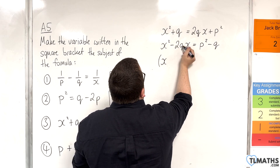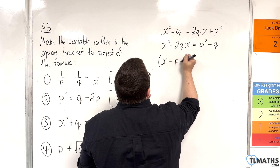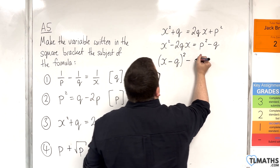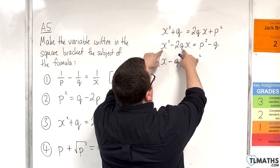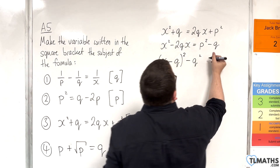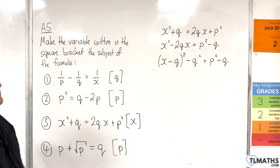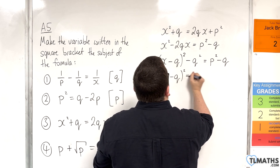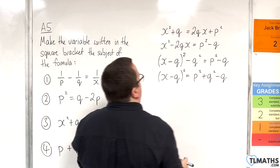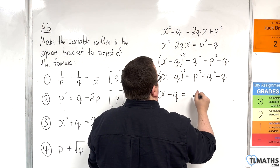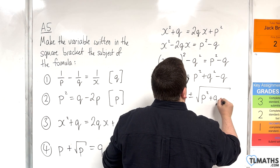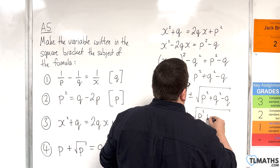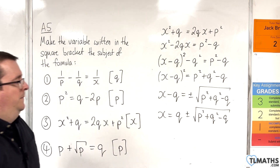So open up a bracket, have x, then we want to halve the coefficient — take away Q, then squared, then take away that value squared, so take away Q squared. That is identical to that left-hand side, and that's equal to P squared take away Q. Then add the Q squared to both sides, giving P squared plus Q squared take away Q. We can then square root both sides. So x take away Q is equal to plus or minus the square root of P squared plus Q squared take away Q. And then add the Q to both sides. There we have our answer.